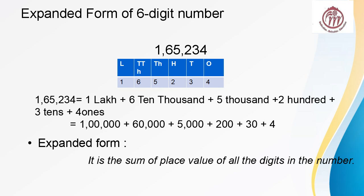Now expanded form of 6-digit number. This is the sum of place value of all the digits in the number. 1,65,234 equals 1 lakh plus 6 ten thousand plus 5 thousand plus 2 hundred plus 3 tens plus 4 ones.